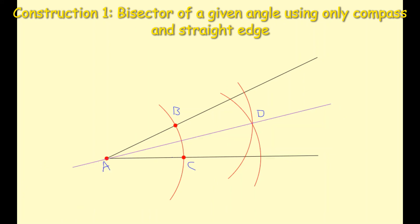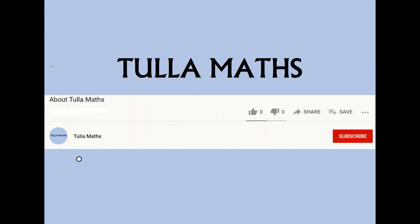I remove my ruler and you can see now that I've created the bisector of that angle. The bisector is basically cutting it in half. To bisect something means to cut it in half. So both angles on either side of that purple line are equal in size. That's construction one. Thank you for watching another tutorial video from Tullamaths. Make sure and subscribe.